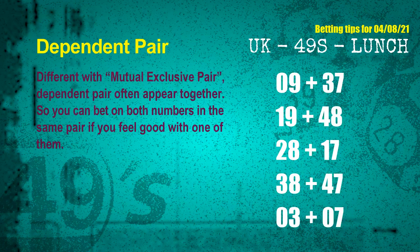Some numbers are mutual exclusive, some are dependent. Numbers in the same dependent pair you can bet on both, because they are often drawn in one draw. The dependent pairs for the next draw are: first pair 09 and 37; second pair 19 and 48; third pair 28 and 17; fourth pair 38 and 47; fifth pair 03 and 07.